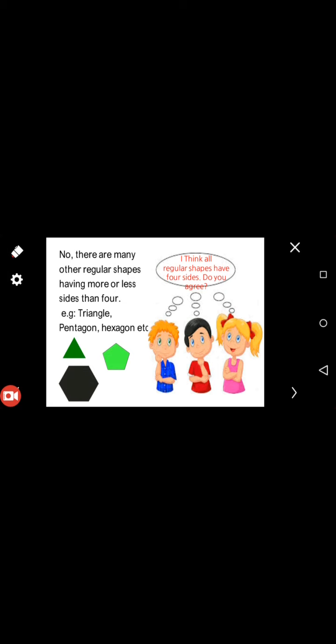There are many other regular shapes having more or less sides than four. The first one is triangle. Triangle means three, hexa means six sides, and penta means five. Do you think that all regular shapes have four sides? Do you agree? No, there are many other regular shapes having more than four sides.